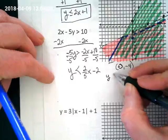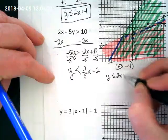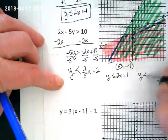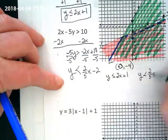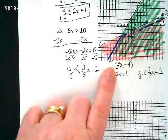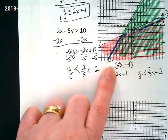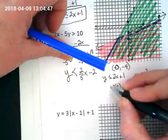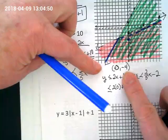So the first one is y is less than or equal to 2x plus 1. And the second is y is less than 2 fifths x minus 2. We're going to plug in our x, which is 0, so we get 2 times 0 plus 1. And what's our y?